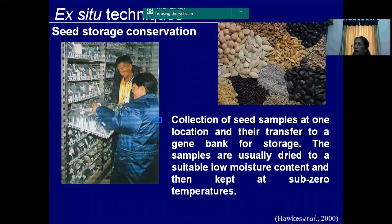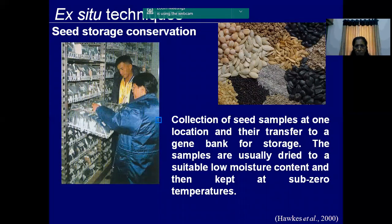This is an example of ex-situ conservation - a gene bank. This is a collection of seed samples in one location, transported to the gene bank for storage. During storage, the seed sample is reduced to a suitable moisture percentage - 8% is the moisture content for the seed to be stored. We bring the seed, dry it, and then conserve it in the gene bank.